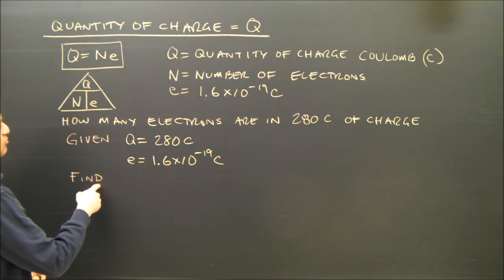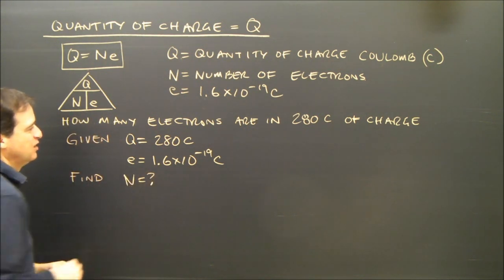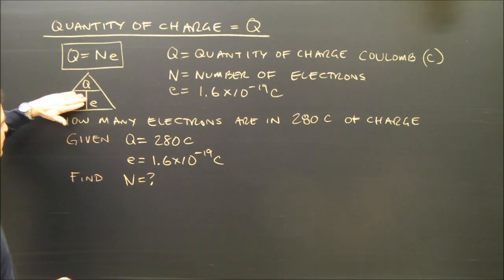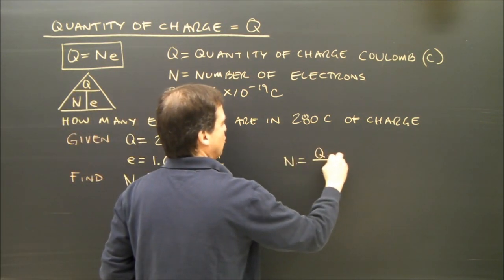So given, find, we're looking for how many electrons? That's N. So what's the formula going to be? N is Q over E. N equals Q over E.